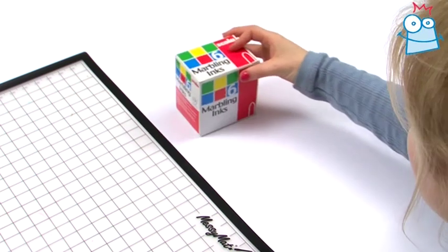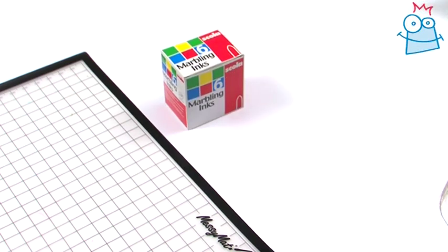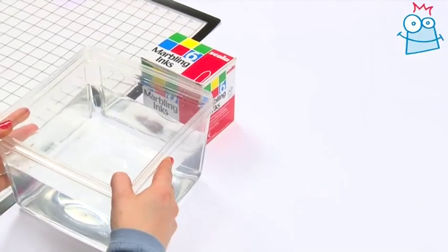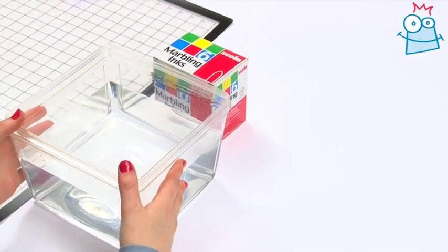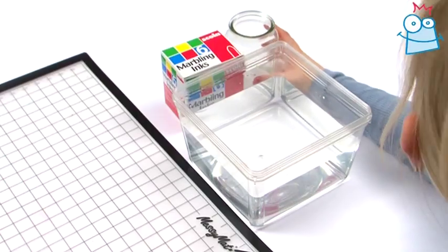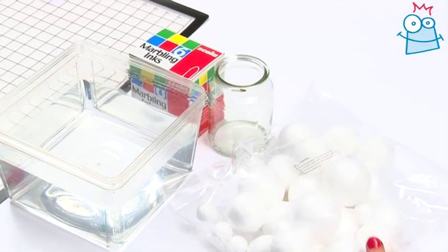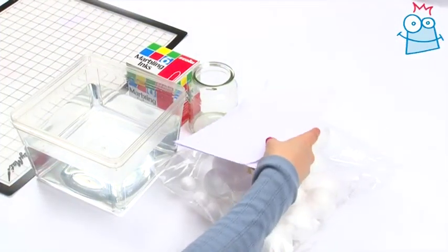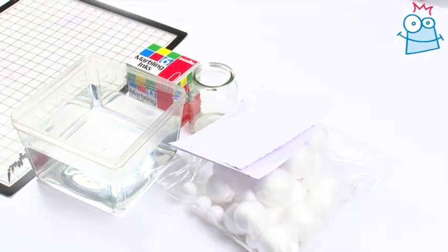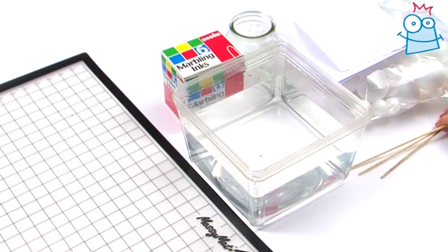For this project you'll need a messy mat, marbling ink, a large plastic tub filled with water, an empty jar, some polystyrene balls, some blank white paper or card, and some wooden sticks.